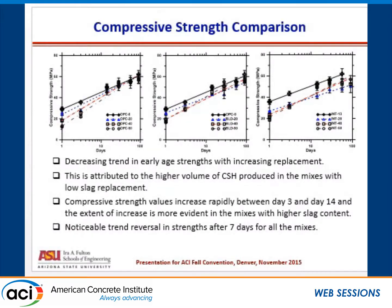At early ages, compressive strength reduces as a function of the replacement level, which is expected because there is less cement in the system. Between day 3 and day 14, we see a trend reversal in most of the plots. In the first plot, it occurs at a later age because there is no limestone. We attribute this to the later-age reactivity of slag, which occurs after the diffusion phase of OPC begins, as well as the slag-limestone interaction and the continued reaction of limestone.